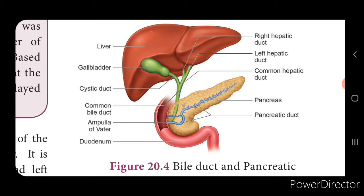The pancreas is a leaf-shaped gland present between the stomach and the duodenum. It acts both as an endocrine and exocrine gland. The exocrine part secretes pancreatic juice containing three enzymes: lipase, trypsin, and amylase, which help in digesting fat, proteins, and starch respectively. The endocrine part consists of the islets of Langerhans, which contain alpha cells and beta cells. Alpha cells secrete glucagon and beta cells secrete insulin.